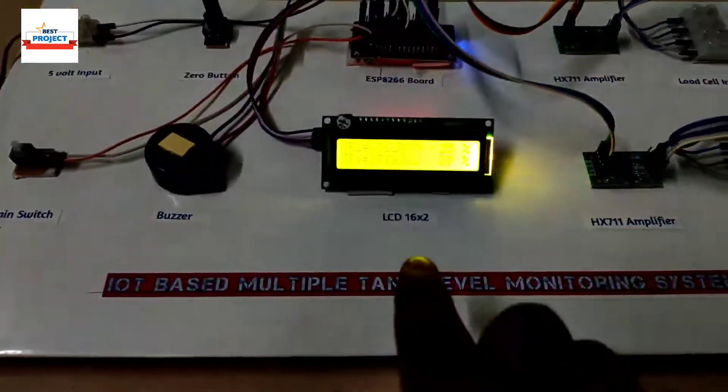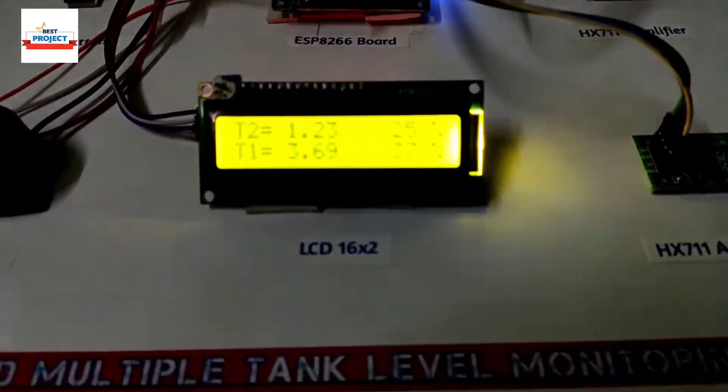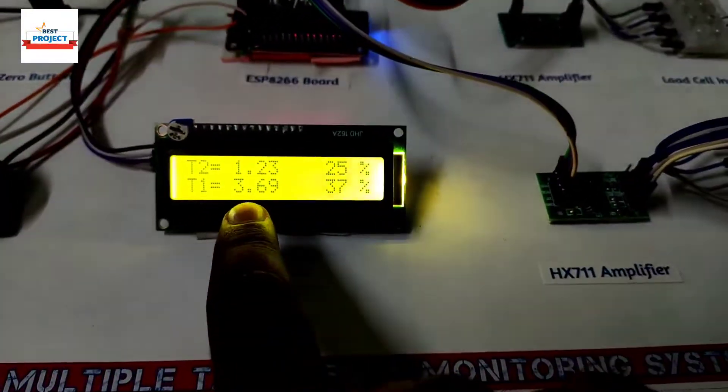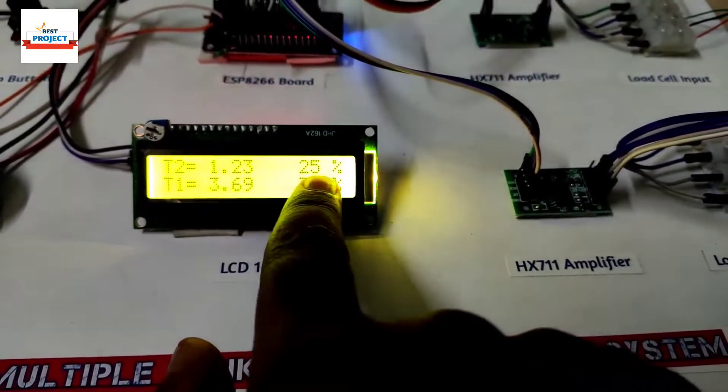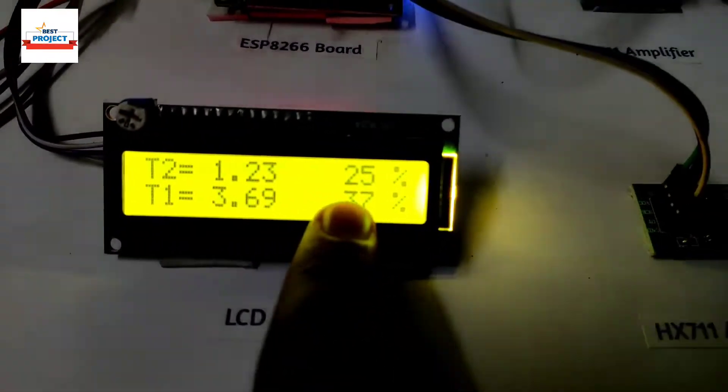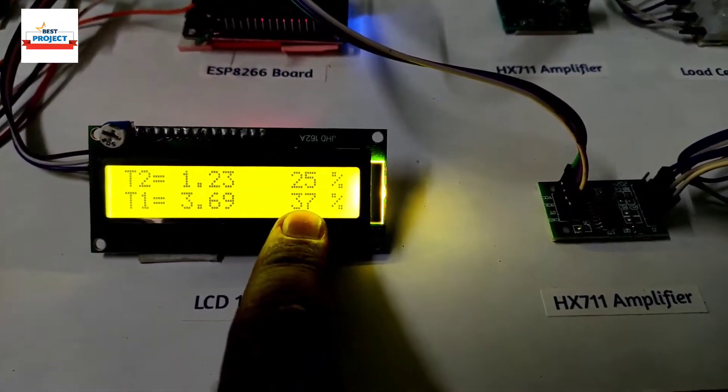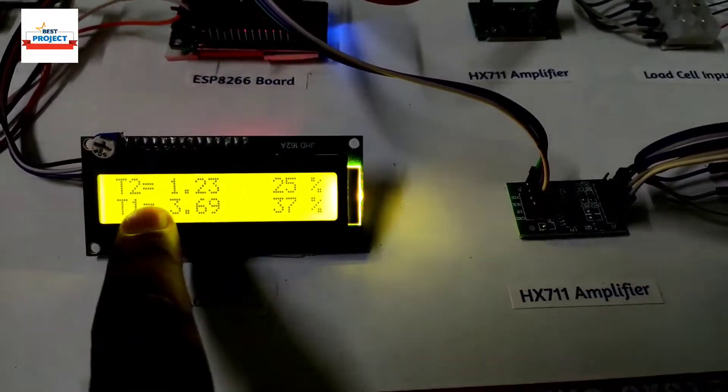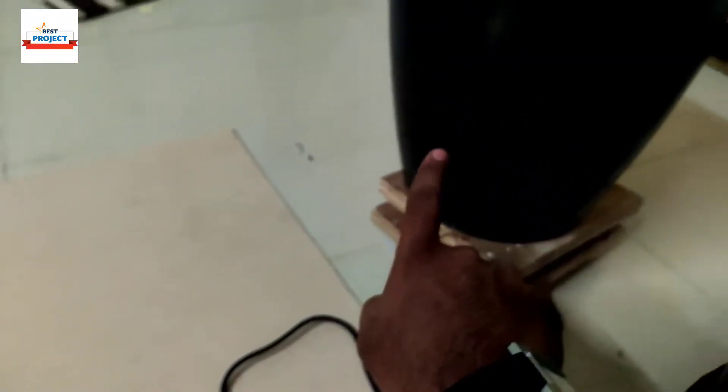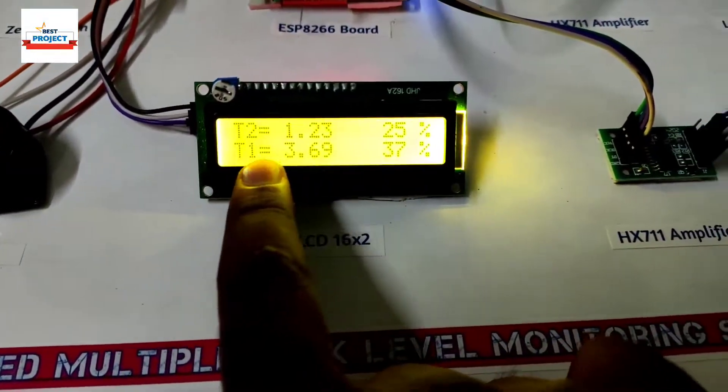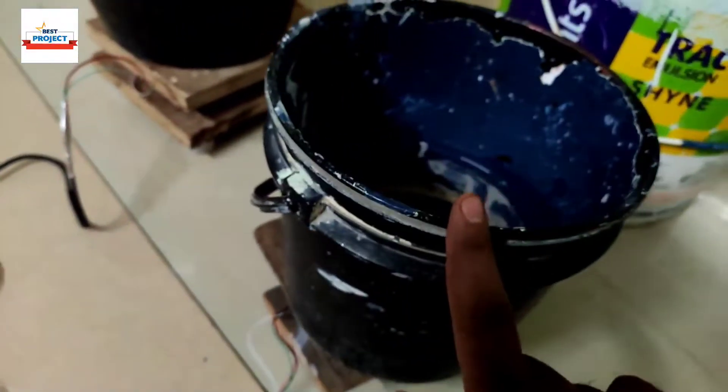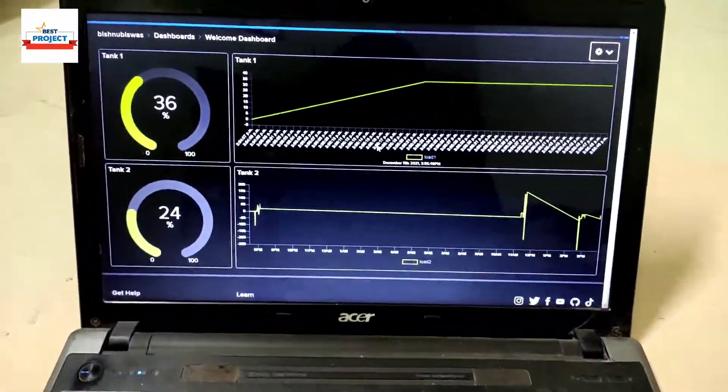When our level reaches more than 10%, the buzzer will automatically turn off. You can see our new readings on the history. The new readings for Tank 2 are 25% and Tank T1 is 37%. Remember, Tank T1 is the bigger tank and Tank 2 is the smaller tank.